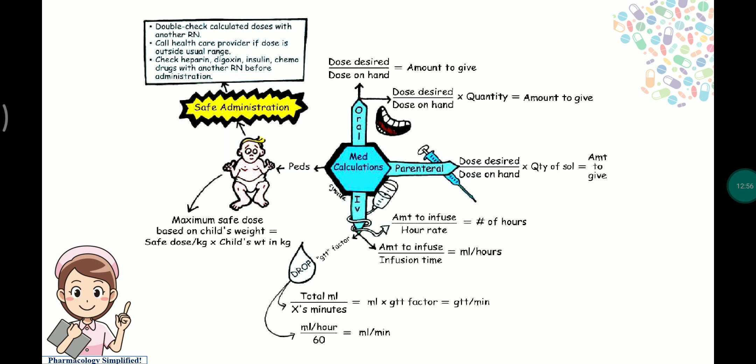For safe administration, a registered nurse must double-check the calculated dose with another registered nurse. If a dose is outside the usual range, the healthcare provider or doctor must be called. For high-alert drugs like heparin, digoxin, insulin, and chemotherapy drugs, a second nurse check before administration is required.